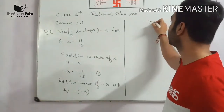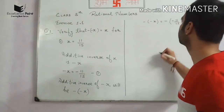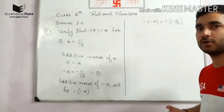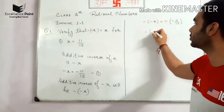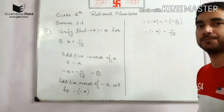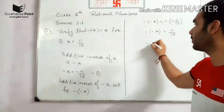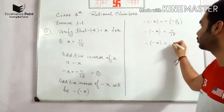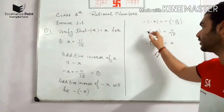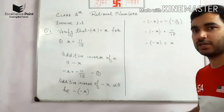Minus of minus of x — we know the rule that minus of minus will be positive. So minus of minus of x will be plus 11 upon 15. And we know that 11 upon 15 is equal to x. So minus of minus of x is equal to x. By this we can say that 11/15 equals x, which is also equal to minus of minus of x.